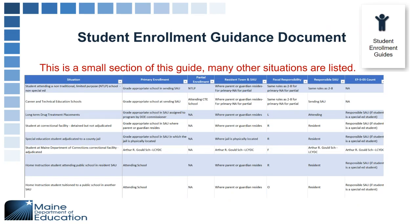The Student Enrollment Guidance Document, located on the Student Enrollment Guides page, has great resources for how to enroll special purpose private school students, how to do foster care enrollments, and it outlines fiscal responsibility codes that can be used. This can be a really useful resource if you have students with unique situations and you need to search for how to get them enrolled.